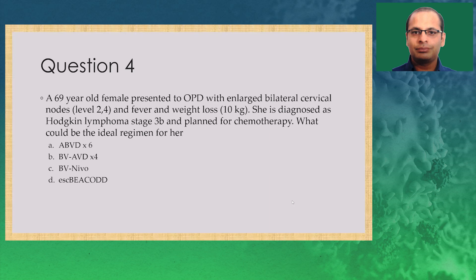Question 4: A 69-year-old female with cervical nodes and weight loss, stage 3B, chemotherapy planned. What is the ideal regime? Options: ABVD six cycles; brentuximab-nivolumab; escalated BEACOP; or brentuximab-AVD four cycles. You don't want to give ABVD six cycles upfront in elderly patients due to high risk of pulmonary toxicity, and six cycles at the outset would be detrimental. Brentuximab with nivolumab lacks randomized data. BEACOP is associated with considerable toxicity and is not recommended for most elderly patients. Based on stage 3 data and the Echelon trial, brentuximab with ABVD for four cycles — option D — would be the most ideal therapy for this patient.